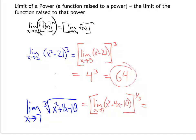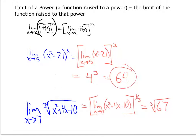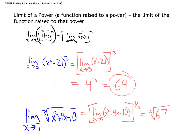So now I'm just taking the cube root of 67. A student asks if you can leave it like that. Yes — unless you see a perfect cube, you can leave it in that form. 67 is likely prime, so approximately 4.06.